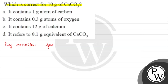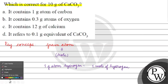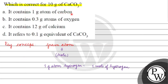Here we have a term used: gram atom. What does this mean? Gram atom is basically equivalent to moles. For example, 1 gram atom of hydrogen means 1 mole of hydrogen. So in this question, 1 gram atom of carbon means 1 mole of carbon, and 0.3 gram atoms of oxygen means 0.3 moles of oxygen.